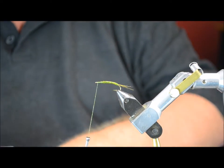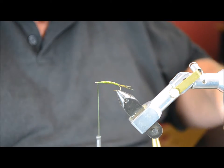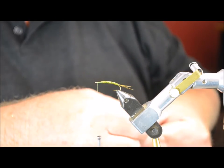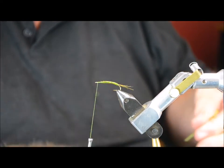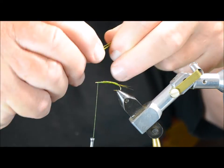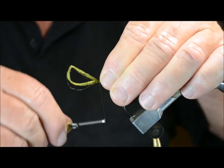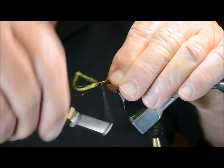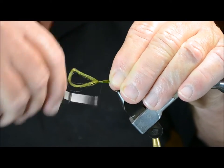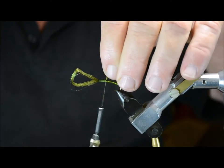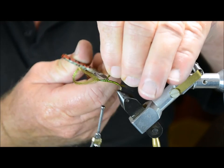Now what I'm going to do is tie in a little bit of Antron yarn, an olive color. Just on the head. Right behind the eye. Just run it down the body about a quarter of an inch. Cut off the excess.